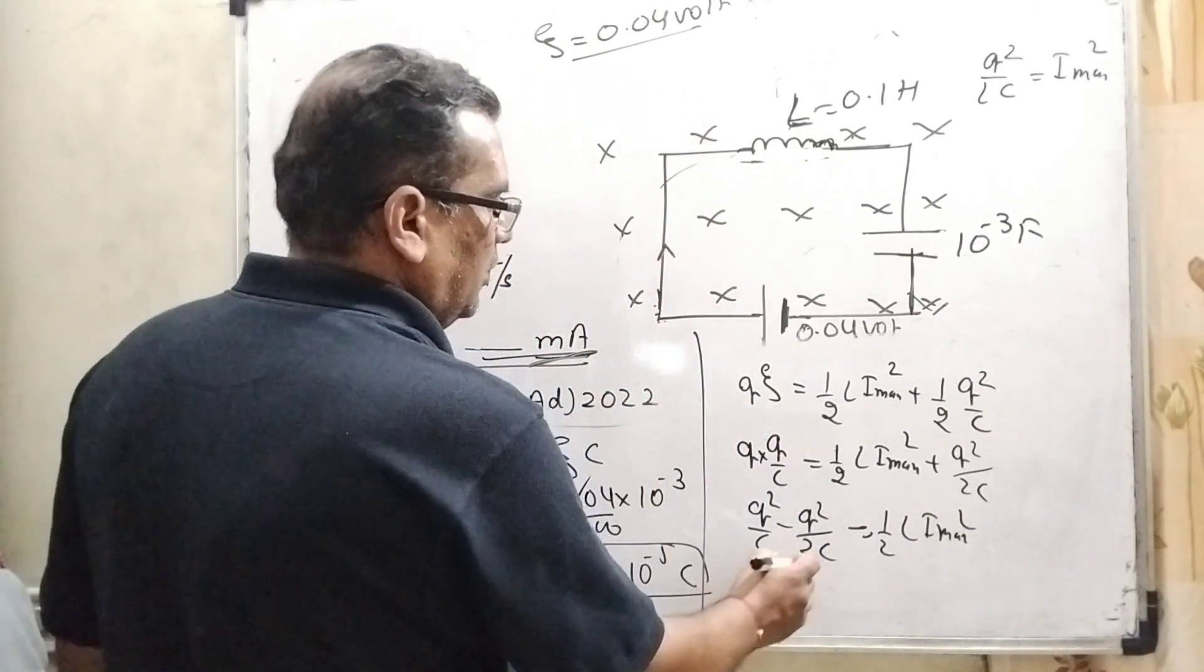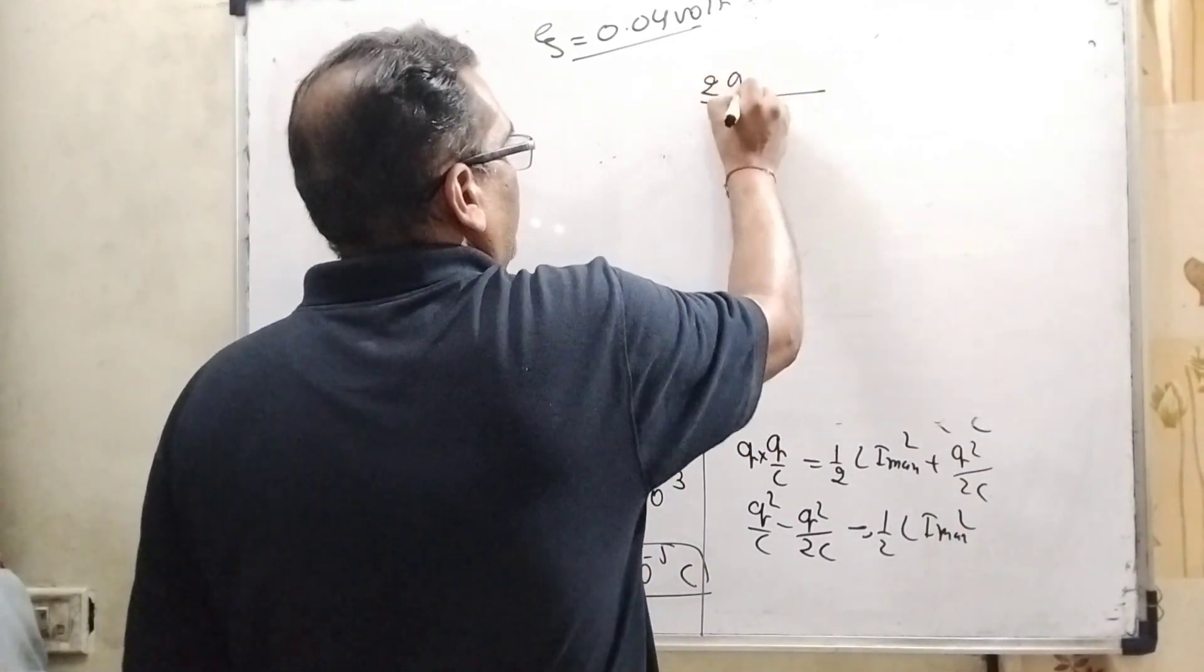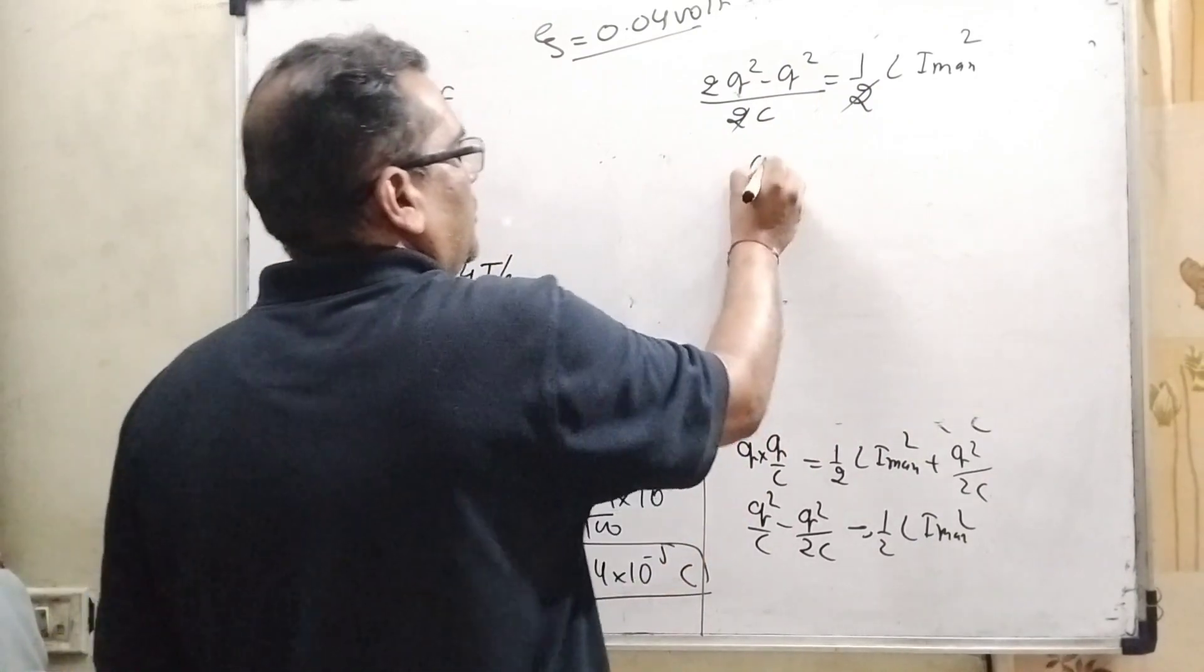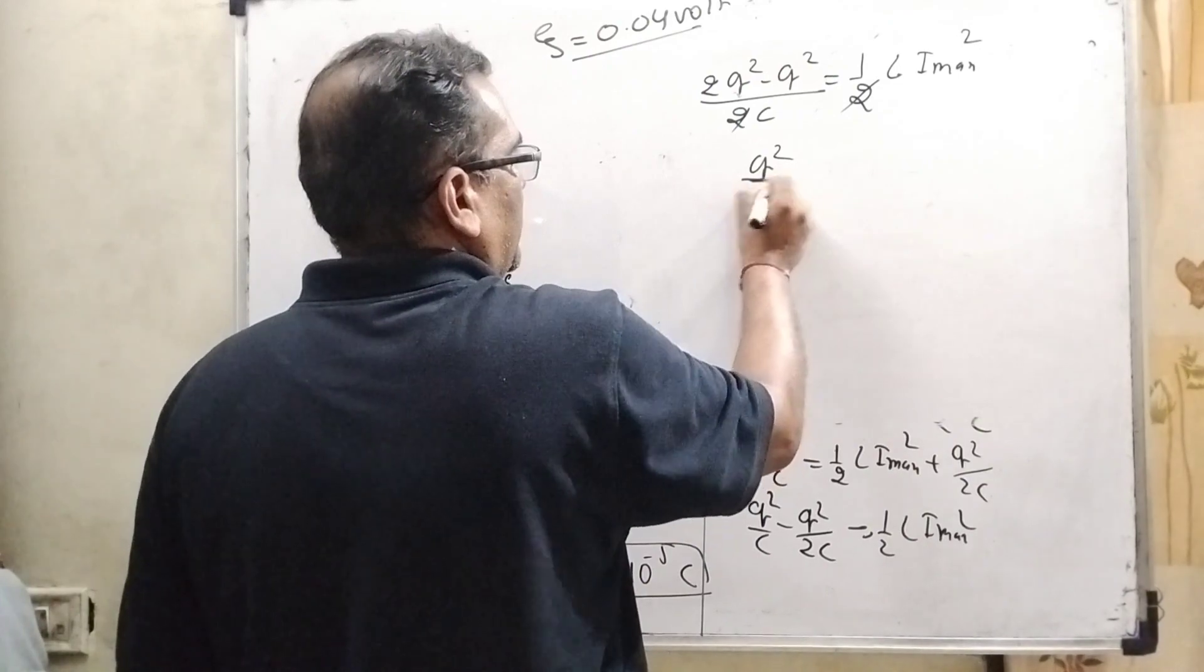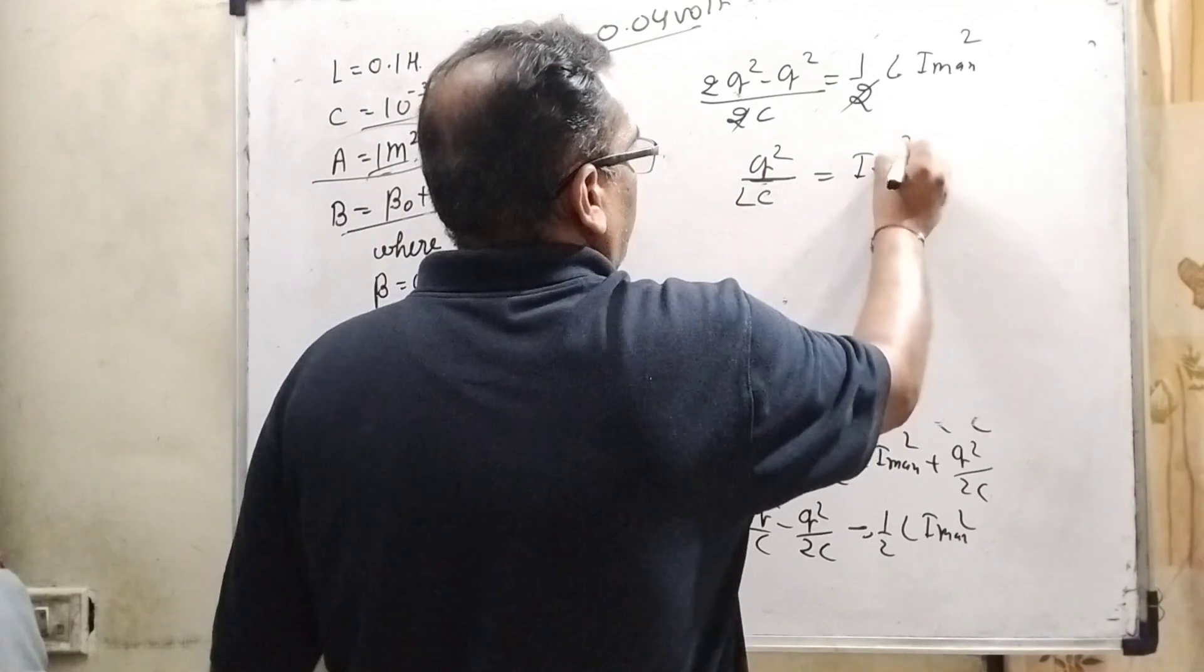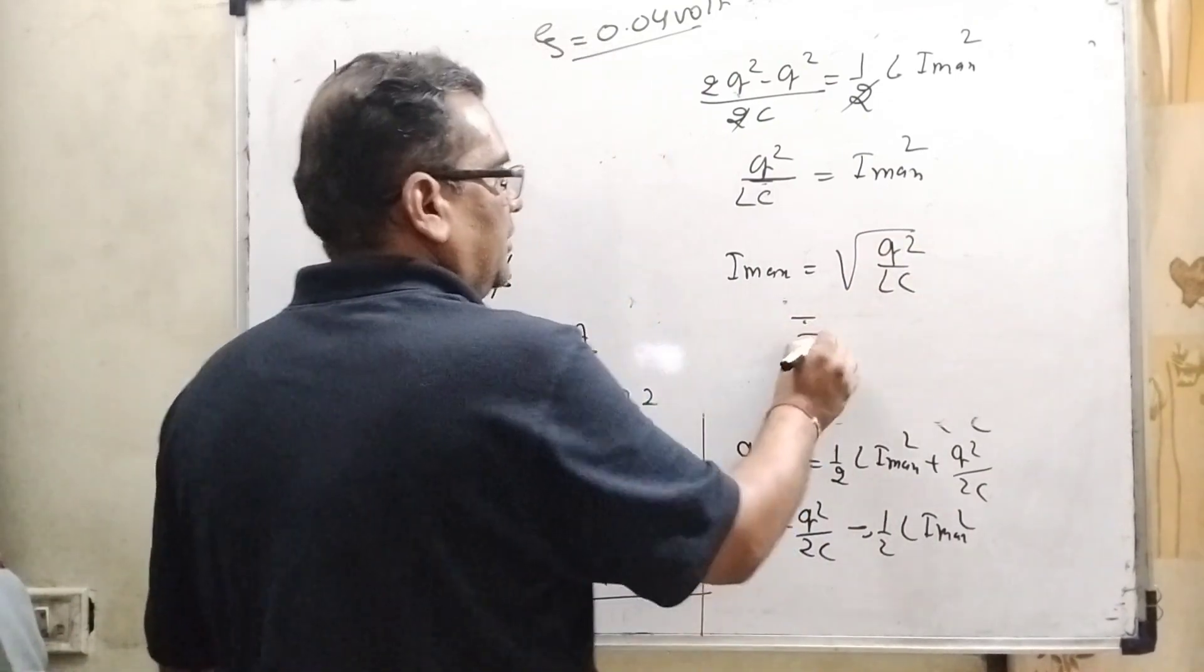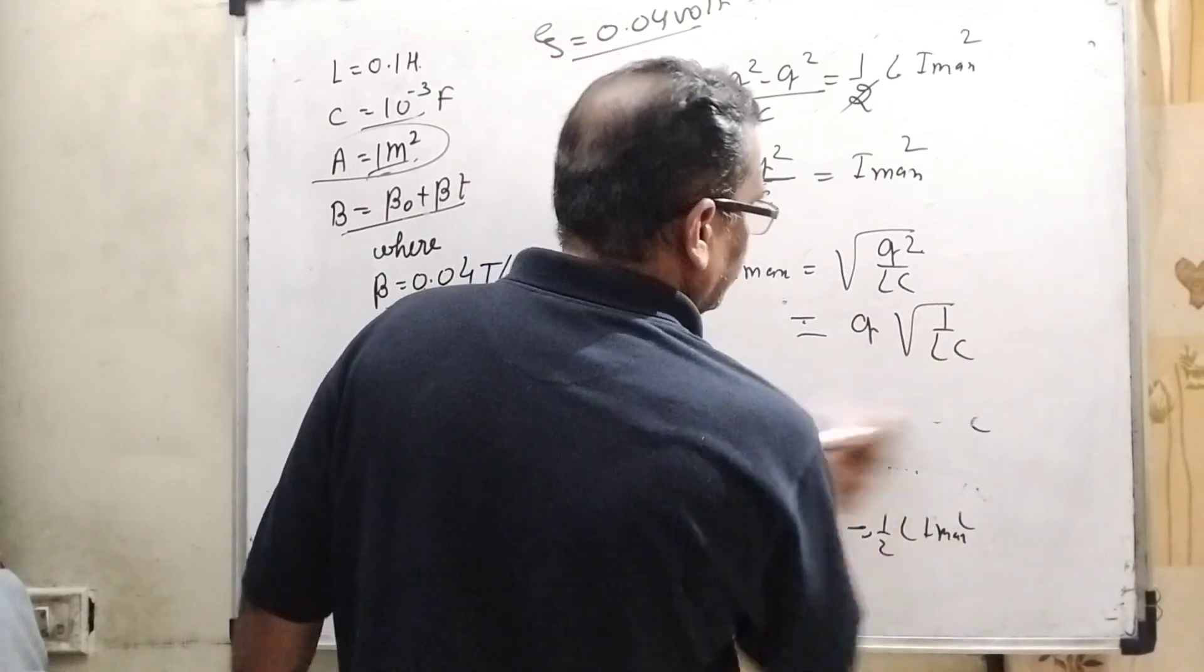Then solving this portion, here Q square by C minus Q square by 2 C. 2 C cancels out, Q square by 2 C, this L transposing and comes to the denominator of the left side. So here I max equal to root Q square by LC. Now substitute values Q, 1 by LC. Now substitute all these values.